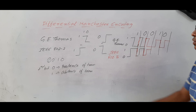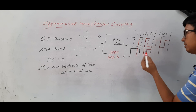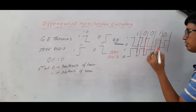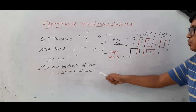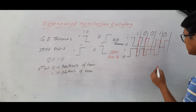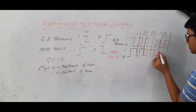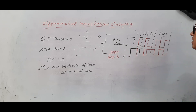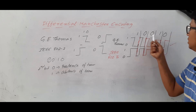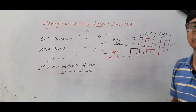Now there is a 1. 1 means absence of transition — you are at the high, stay there and move from high to low. Then 0 is presence of transition — you are at the low, go to the high, and then represent. This is the way we represent 1-0-0-1-0 according to J.E. Thomas and IEEE 802.3 representation.